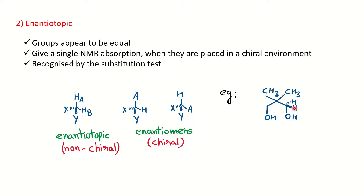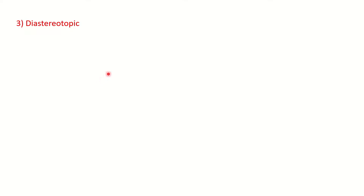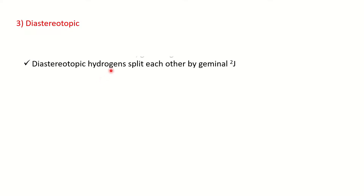In a worked example, we examine the CH₂ group's two protons with respect to its carbon. Using the substitution test, replacing one hydrogen with group A creates a chiral center with four different groups: H, A, OH, and a larger group. This generates enantiomers by substitution, confirming the two protons are enantiotopic. NMR cannot distinguish enantiotopic protons, so you get only one signal for these two protons.